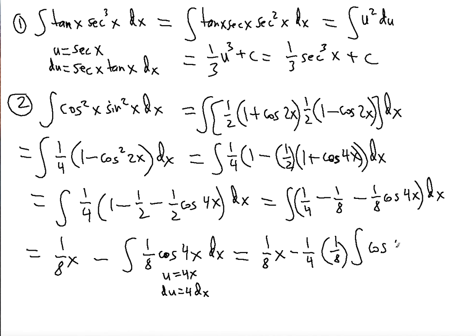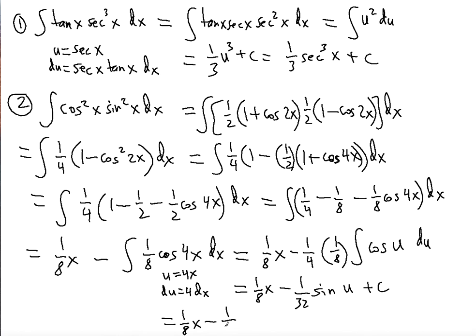The antiderivative of cosine is sine, so we get one-eighth x minus one-thirty-second sine u plus a constant. Substituting u equals 4x back, the final answer is one-eighth x minus one-thirty-second sine 4x plus a constant. Thank you so much for watching this video — please subscribe to my channel and I'll see you in the next one.